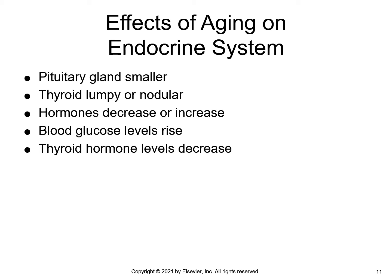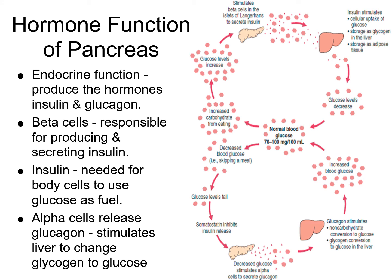Thyroid disorders are twice as common in older adults, and hypothyroidism is the most common thyroid disorder, especially in older women. The pancreas is both an endocrine gland, secreting into the bloodstream, and an exocrine gland, secreting through a duct to the target tissues. Its endocrine function is to produce insulin and glucagon. The beta cells are responsible for producing and secreting insulin, which is needed for cells to use glucose as fuel. The alpha cells release glucagon, which stimulates the liver to change glycogen into glucose.